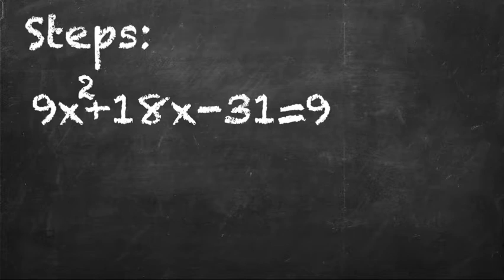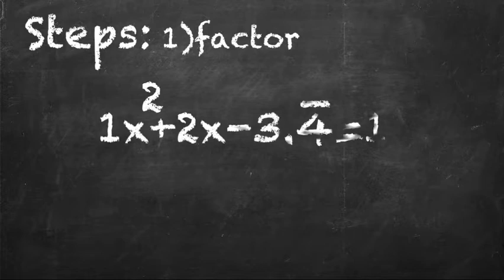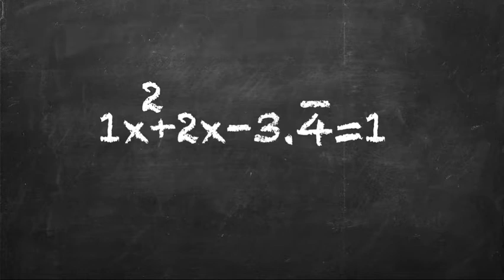The first thing that you want to do is factor out each number, and I'm going to factor it by 9. So after I factor each one of those numbers by 9, you should get x squared plus 2x minus 3.4 repeating equals 1, so put the line over the 4.